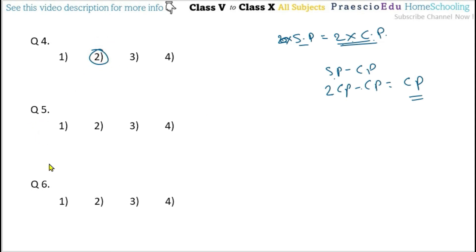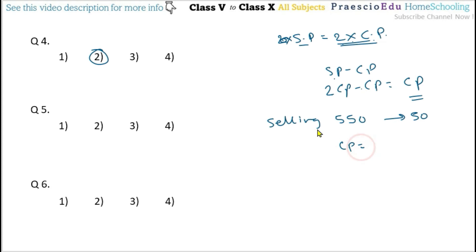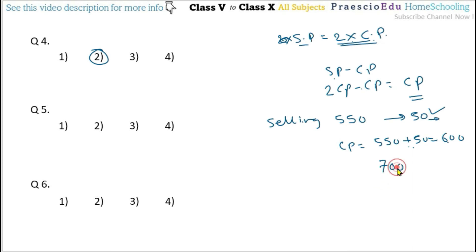Question number 5: on selling an article for rupees 550 there is a loss of rupees 50. Since there is a loss, CP equals selling price plus loss, so CP equals 550 plus 50 equals rupees 600. If the same article is sold for rupees 700, profit equals 700 minus 600 equals rupees 100. This is given in option number 4.